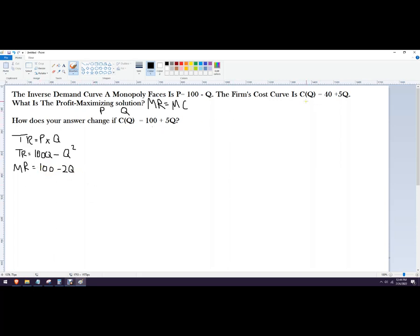Now I need marginal cost. Marginal cost is the partial derivative with respect to Q of this. Marginal cost is really easy. That goes away, becomes constant. This just becomes 5. So marginal cost is 5.